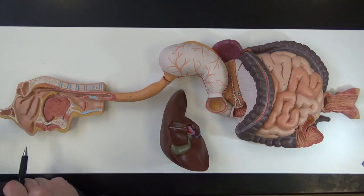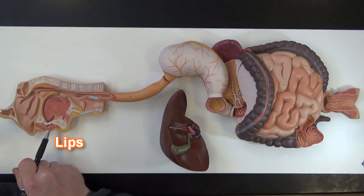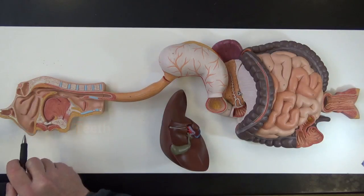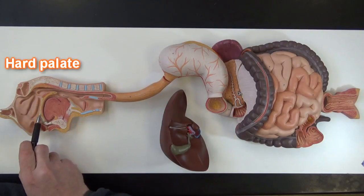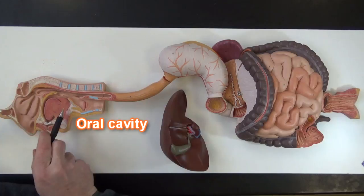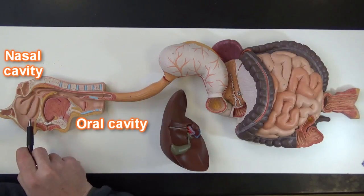This is a digestive system model. Here are the lips. These are the teeth — specifically, they're the incisors. And here we have the hard palate up here, separating the oral cavity from the nasal cavity.